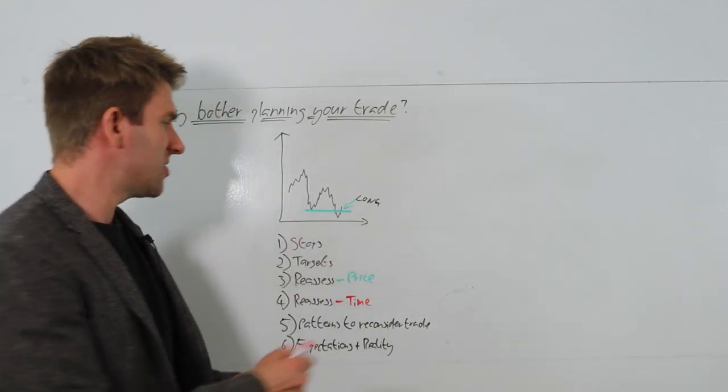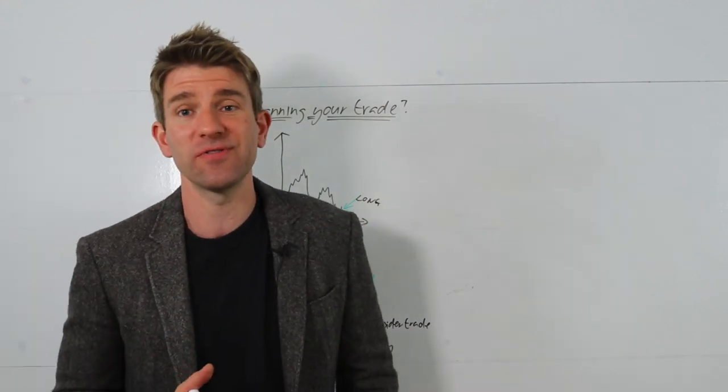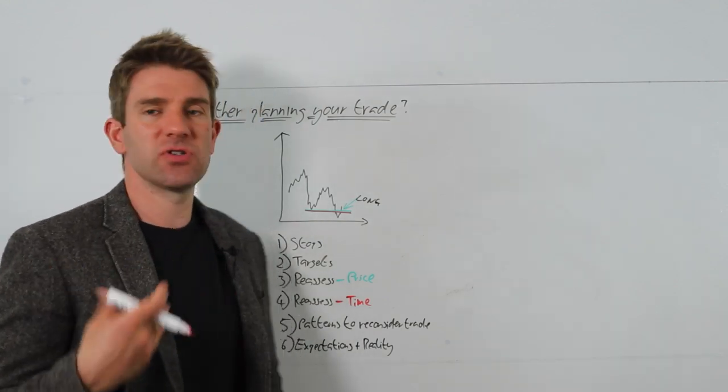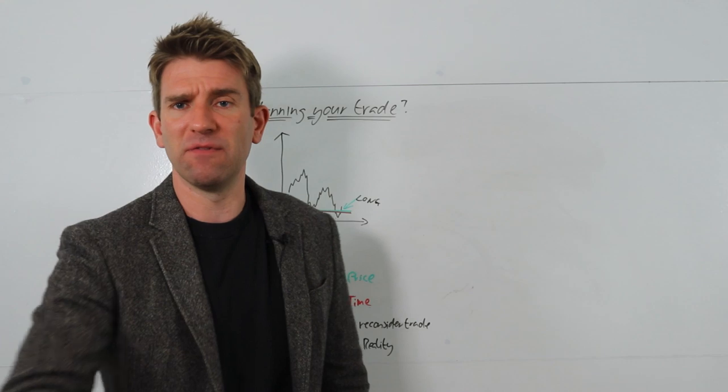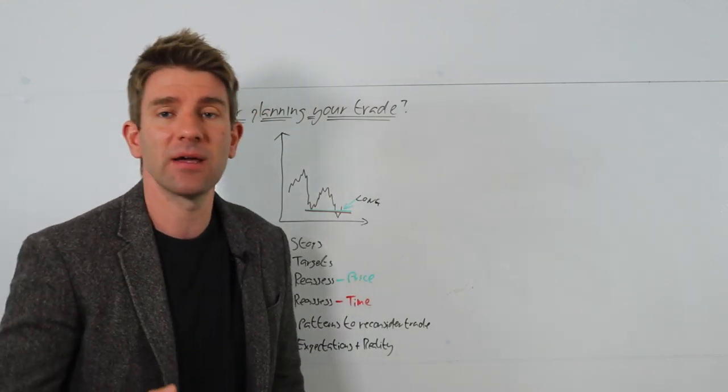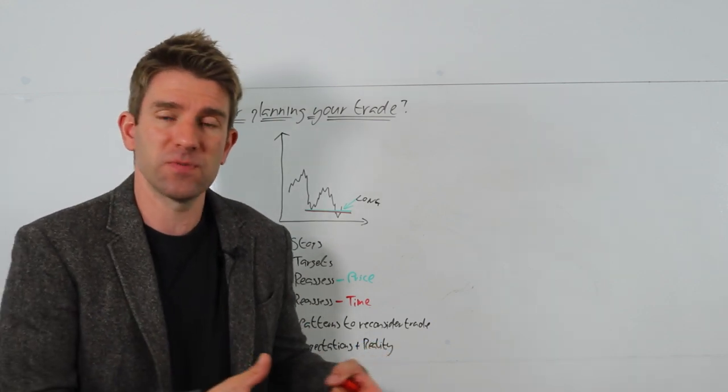So let's look at an example, guys. The first thing is, let's imagine we've gone long in this position here - a double bottom retest through support, standard kind of stuff. You take the long. And the obvious one that I would hope most of you watching the channel do is you decide where to put your stop loss in.